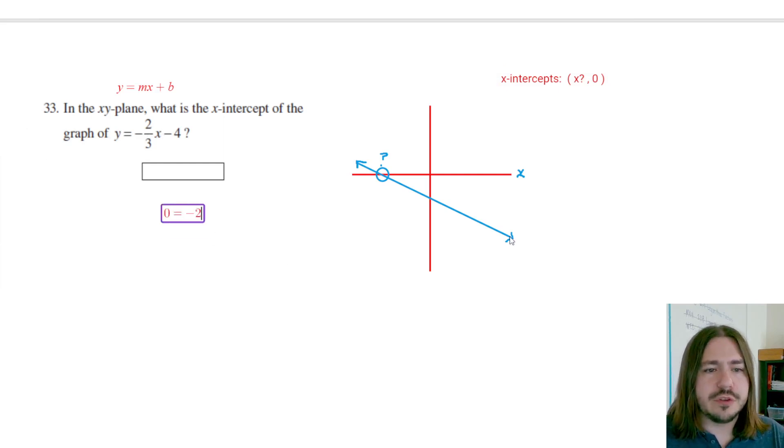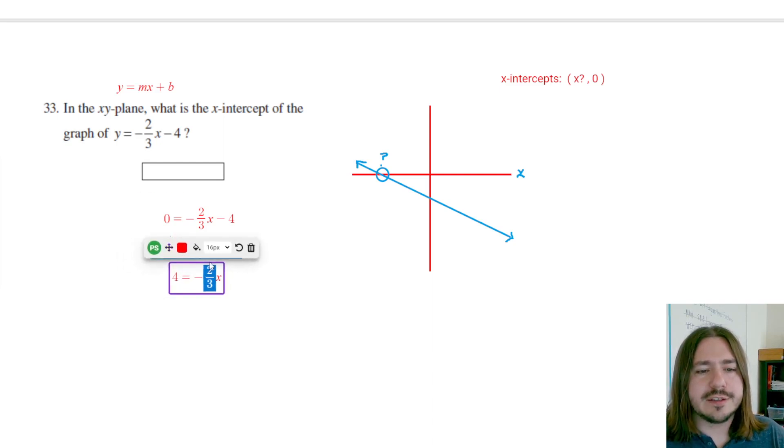So zero equals negative two-thirds x minus four. We're solving for x here. The first step to doing that is going to be to add four to both sides. And when I do that, I'm going to get four equals negative two-thirds x.